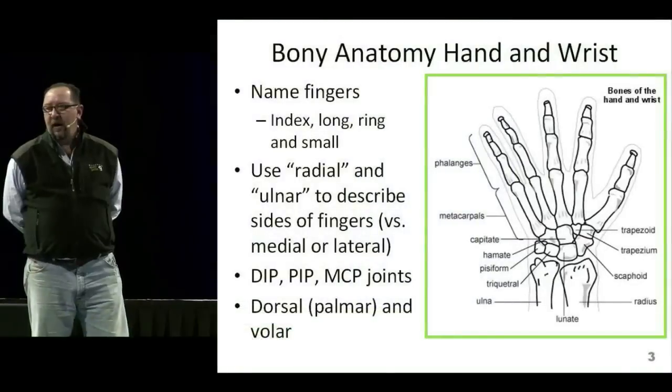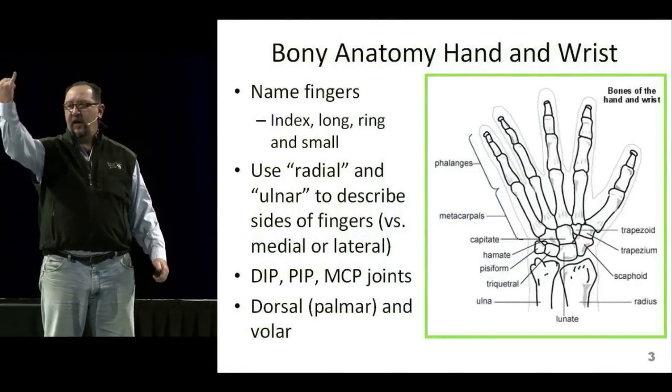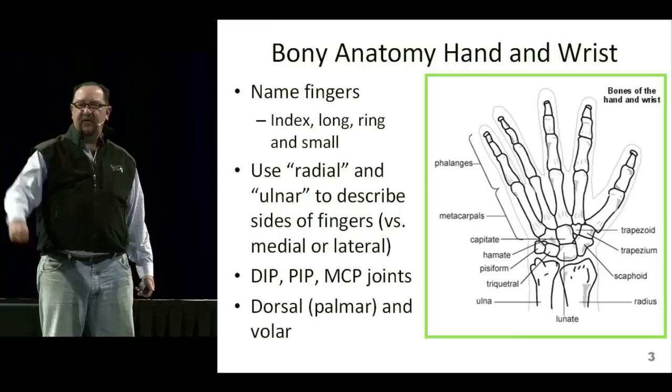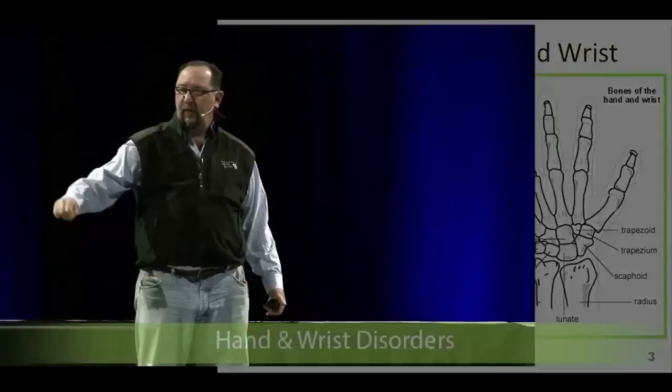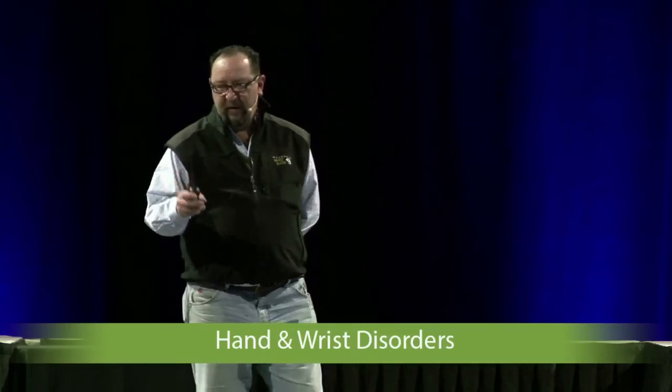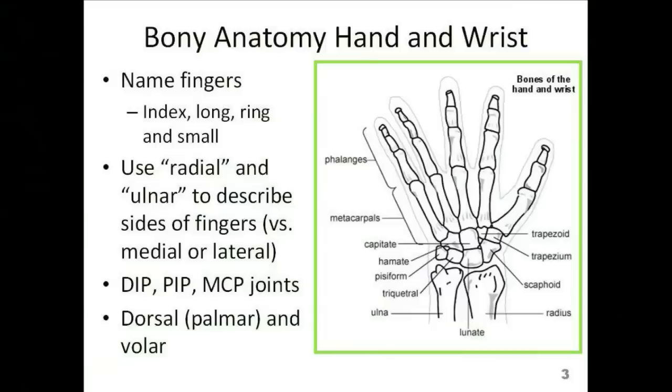Naming fingers is better than numbering them, because depending on where you're from, the numbering differs. So call it a thumb, index, long, ring, or small — don't number them, name them. Always describe laterality as radial or ulnar, and then you can describe them as dorsal, volar, or palmar. Pay a lot of attention to open joints — if you've got a laceration over a joint like a knuckle from punching something, that's important.